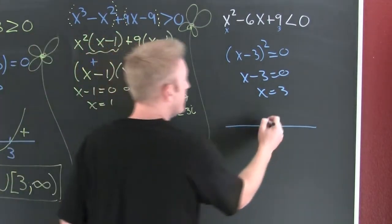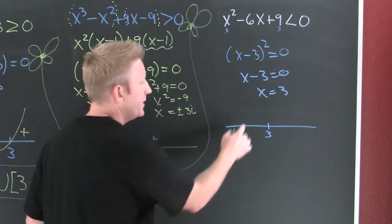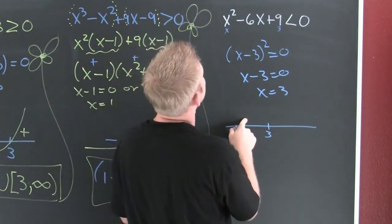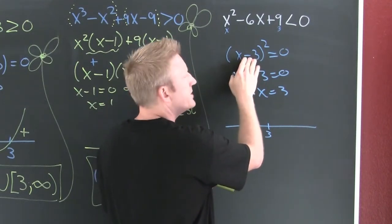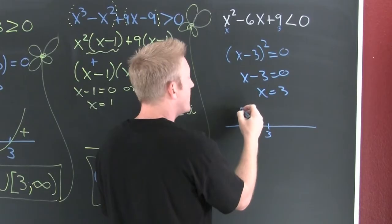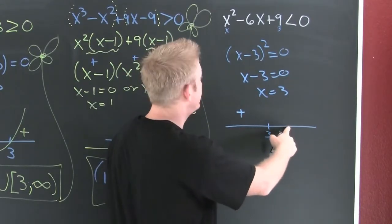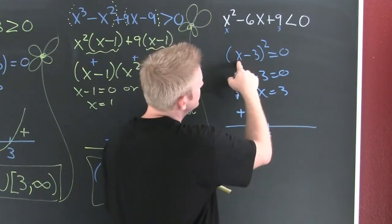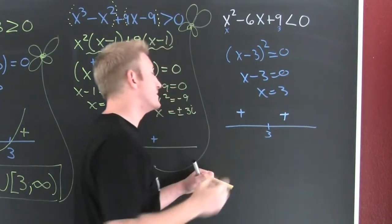I'm looking for a number less than three. Zero. I put zero in there. Zero minus three is minus three squared is nine, so it's positive over here. I pick a number bigger than three. How about ten? So then ten minus three is seven squared is forty-nine. That's positive also.